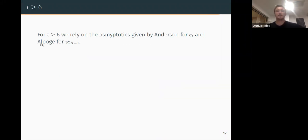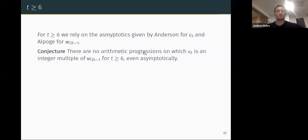What happens if I take t greater than 5? Well for this we rely on these asymptotics that I mentioned by Anderson and Ahlgren for c_t and sc_(2t-1). Here's our conjecture: there are no arithmetic progressions on which c_t is an integer multiple of sc_(2t-1), even asymptotically, for basically all t. So we believe that t equals 4 is the only case this happens—a very special case.